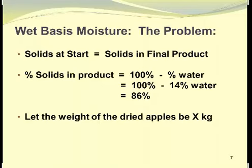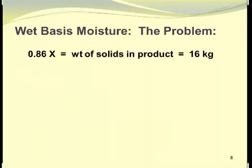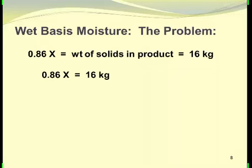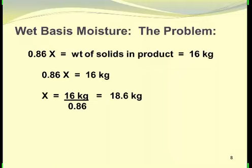We let the weight of the dried apples be X kilograms, since we do not know the actual weight of the dried product. We can then write the equation: 0.86X equals the weight of solids, which is 16 kilograms. Solving for X by dividing 16 kilograms by 0.86, we find that we have 18.6 kilograms of final product.